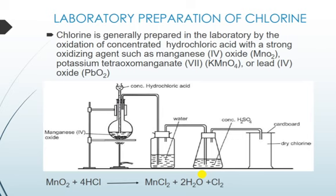Now we'll be looking at the laboratory preparation of chlorine. Chlorine is generally prepared in the laboratory by the oxidation of concentrated hydrochloric acid with strong oxidizing agents such as manganese dioxide, potassium permanganate, or lead dioxide.